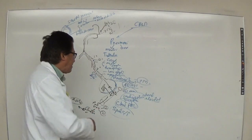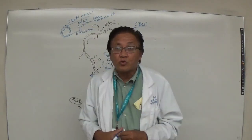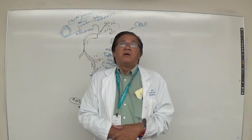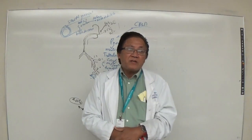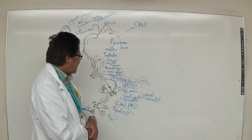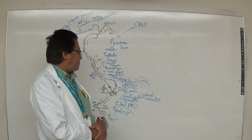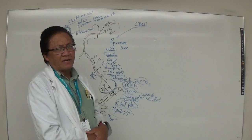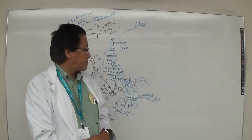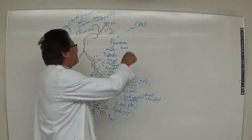Treatment includes INH, rifampicin, ethambutol, and streptomycin. Streptomycin is ototoxic — it affects hearing — and is also nephrotoxic. It is an aminoglycoside. Now, what about pneumothorax?